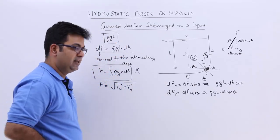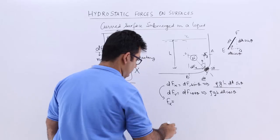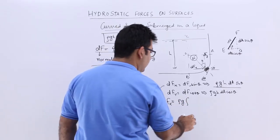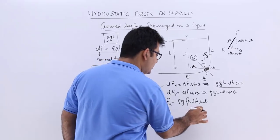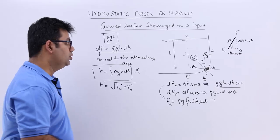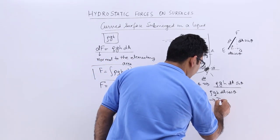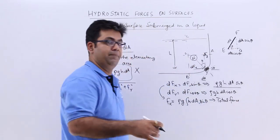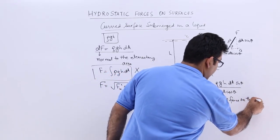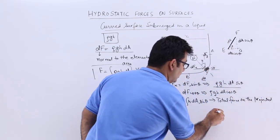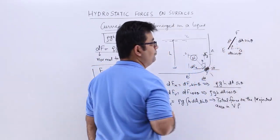If we integrate the x-component, we get Fx equals rho g times the integral of h dA sin theta. This is the force on the projected area in the vertical plane. So Fx is the total pressure force on the projected area in the vertical plane — that vertical plane being the plane FG.